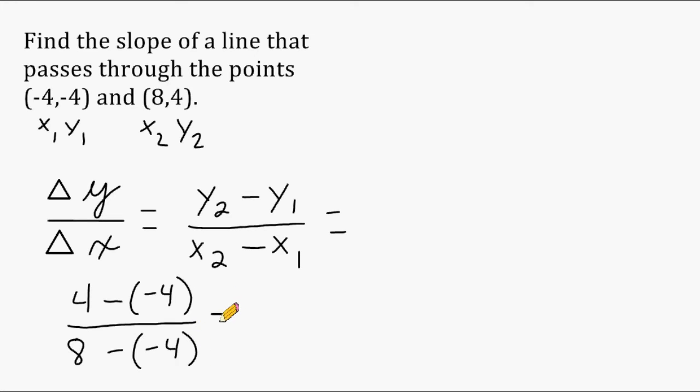Now the next thing that we have to do is simplify the numerator and simplify the denominator. Now remember, when you are subtracting a negative or have two consecutive negatives, we have to turn those both into positives. We have the same thing on the bottom here. So let's just turn those into positives. So when we simplify the numerator, we really have 4 plus 4 which is 8. And for the denominator, we have 8 plus 4 which is 12.